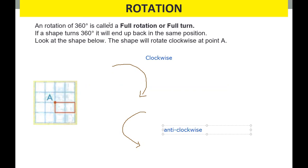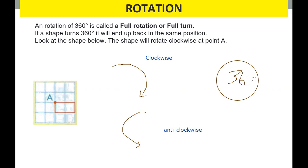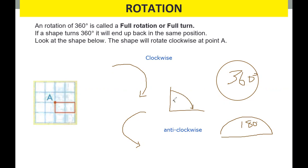If you remember your lesson about angles: a full rotation of 360 degrees is a full circle. If we say 180, it will be only a half circle. And if it turns 90 degrees, it's only a quarter of the circle. And if it will turn 270 degrees, that is a three-quarter turn.